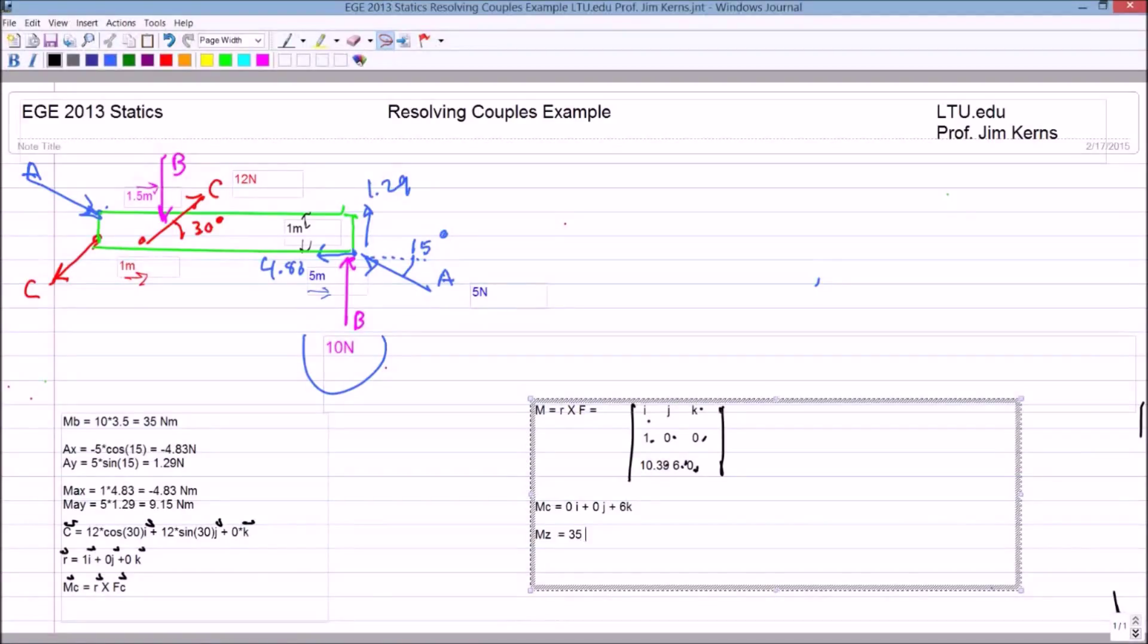The moment about the z-axis is equal to 35 newton meters from vector B, minus 4.83 newton meters from the x component of A, plus 6.45 newton meters from the y component of A, and 6 newton meters from the k component of moment C.